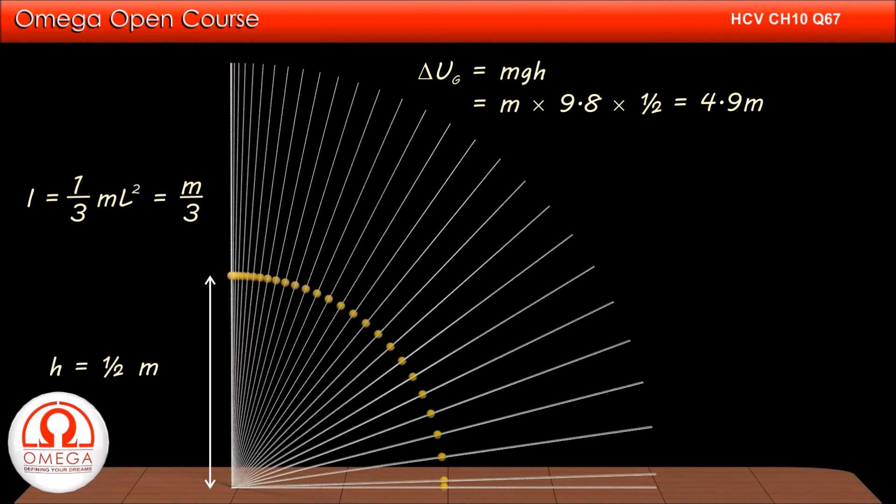Putting l is equal to 1 meter, we get moment of inertia is equal to m by 3. If we assume the angular speed of the stick just before it strikes the floor to be omega, then its rotational kinetic energy at that instant is half I omega square, or half into m by 3 into omega square.